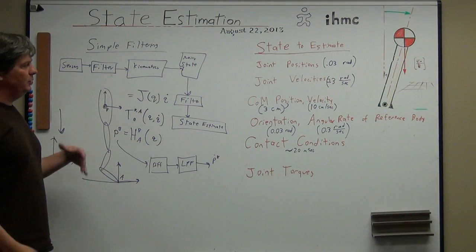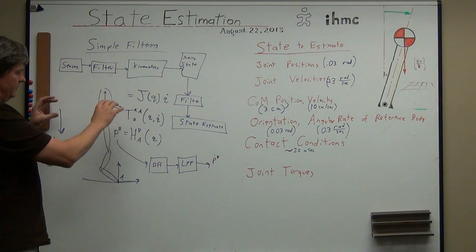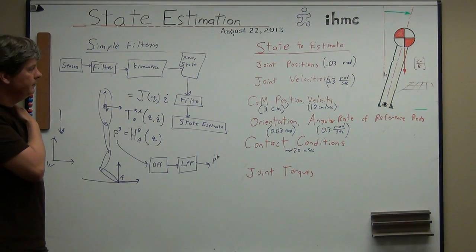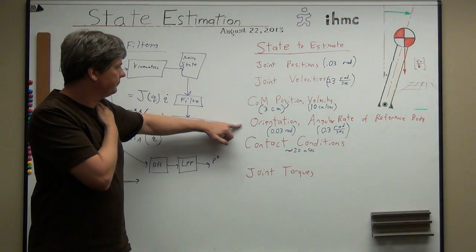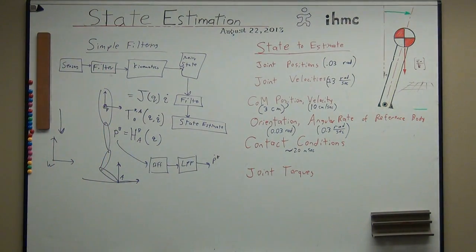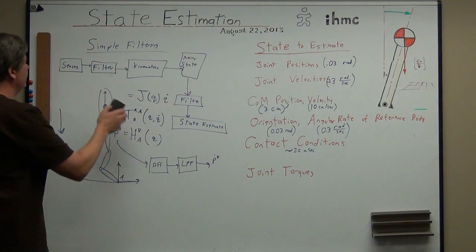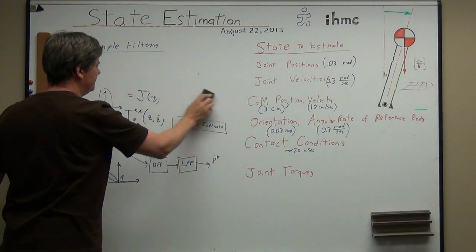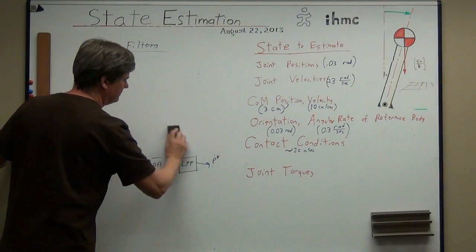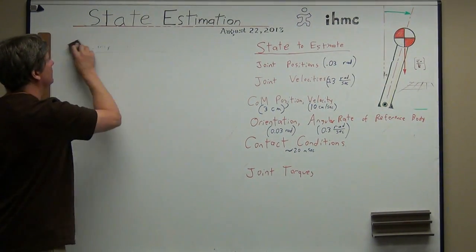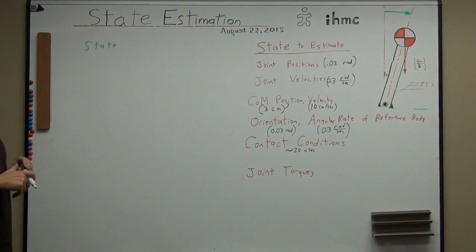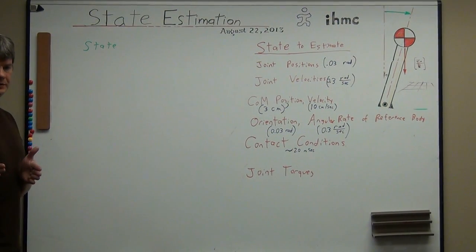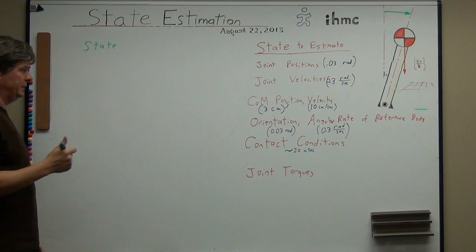Then for computing the center of mass, you compute the CoM of all the little masses and take the weighted average — which you can do in one big matrix. These more interesting state estimators essentially simulate the system, see how bad the simulation is based on the sensors, and correct the simulation based on an error measurement. Yes — it's the same as an observer.